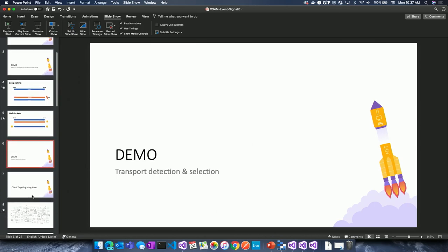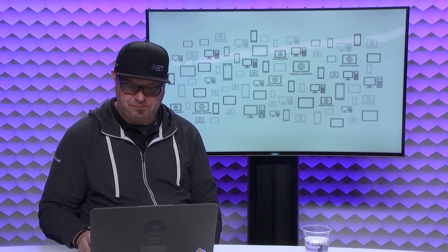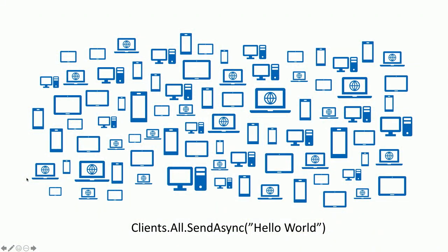Now I'll show you this concept of client targeting using hubs. What I want to talk about is how you can specifically target an individual client, a set of clients, or a group of clients when sending messages to an army of different connected clients. The first thing you've already seen is sending a message to everyone — I use clients.all.SendAsync, and it calls that method on every single connected client, whether that's 1,000 or 5,000.